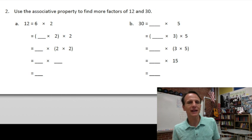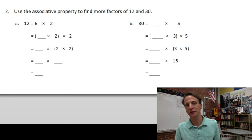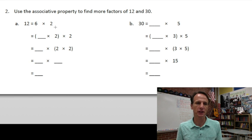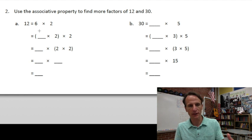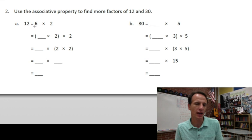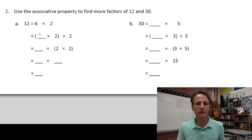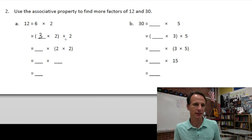Number two — I love this one. We're going to use the cute little associative property to find more factors of twelve and thirty. They're giving us at least one or two to start with. They say we all know twelve is six times two, and now you see the parentheses. What times two is six? Three times two is six. You see how that works?